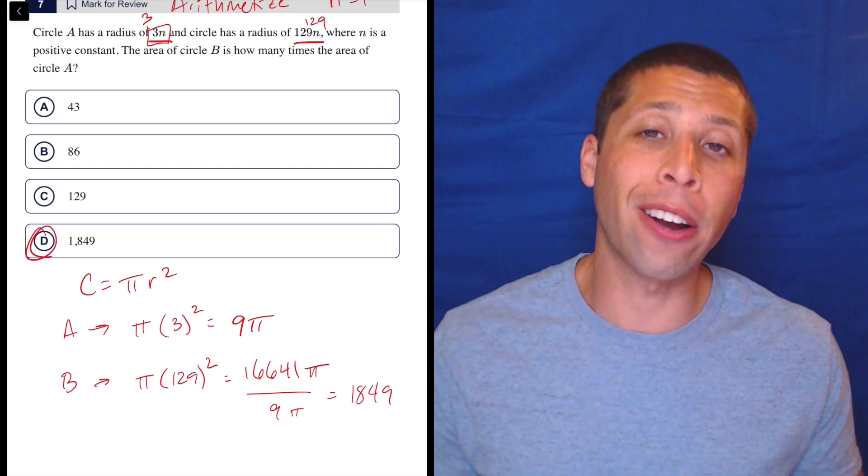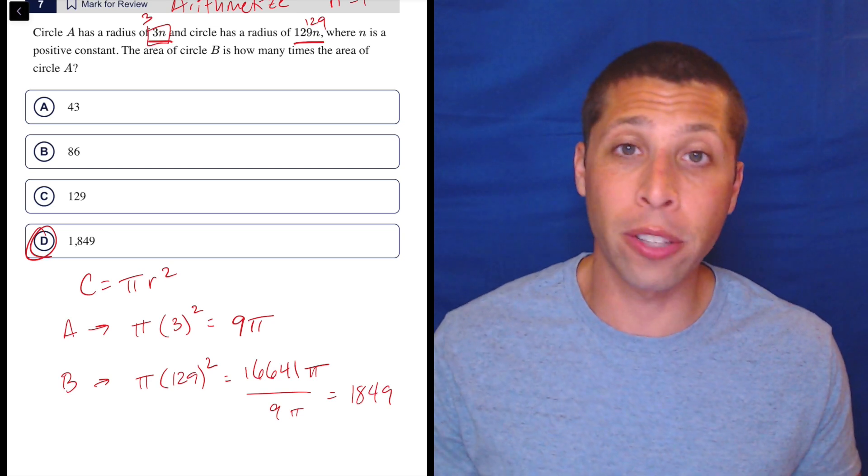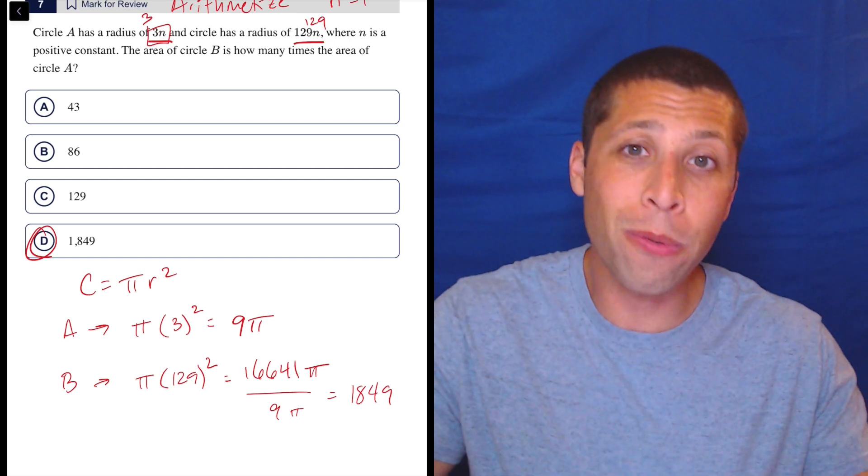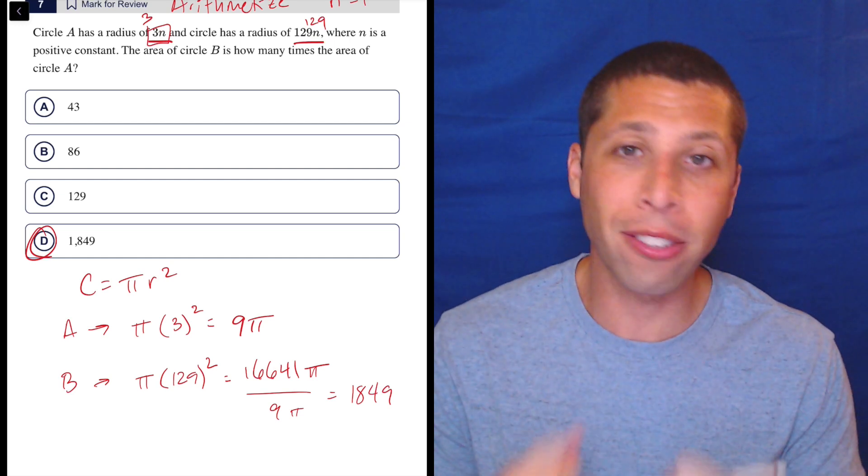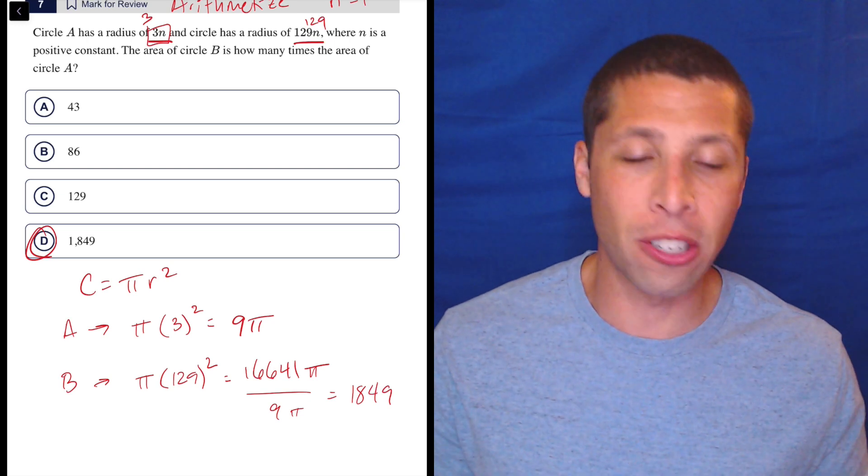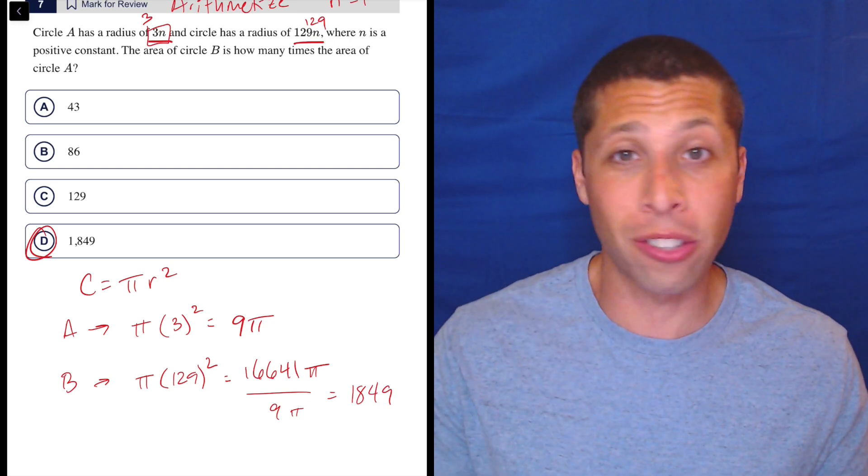But they know that by throwing that n in there, they might get some people to make an error that they wouldn't otherwise make. So don't open the door to that. Don't let them get you that way. Bring it back to the thing you want. Bring it back to normal distances and it'll be much easier to solve and think about. And there's really just no doubt at all.